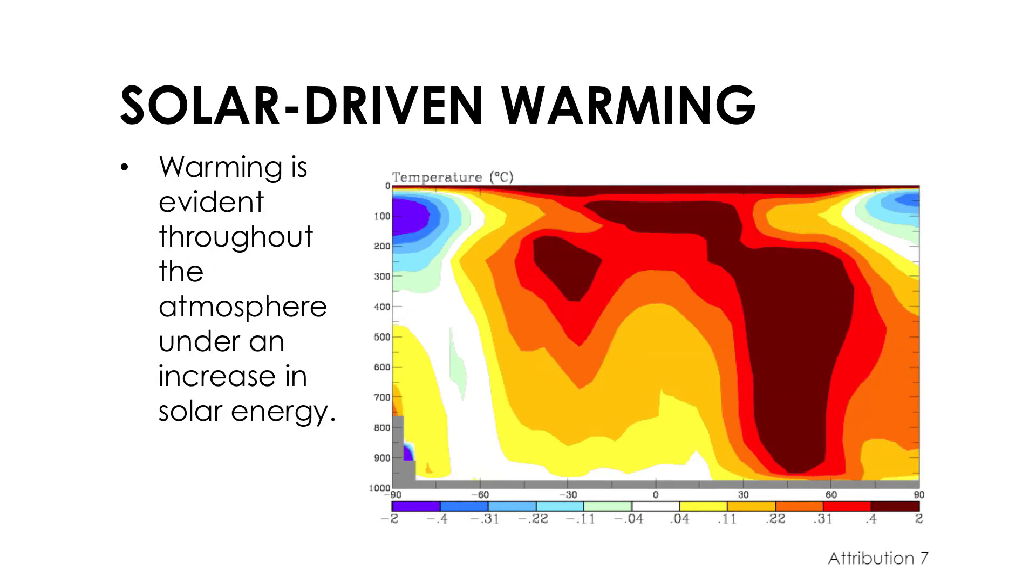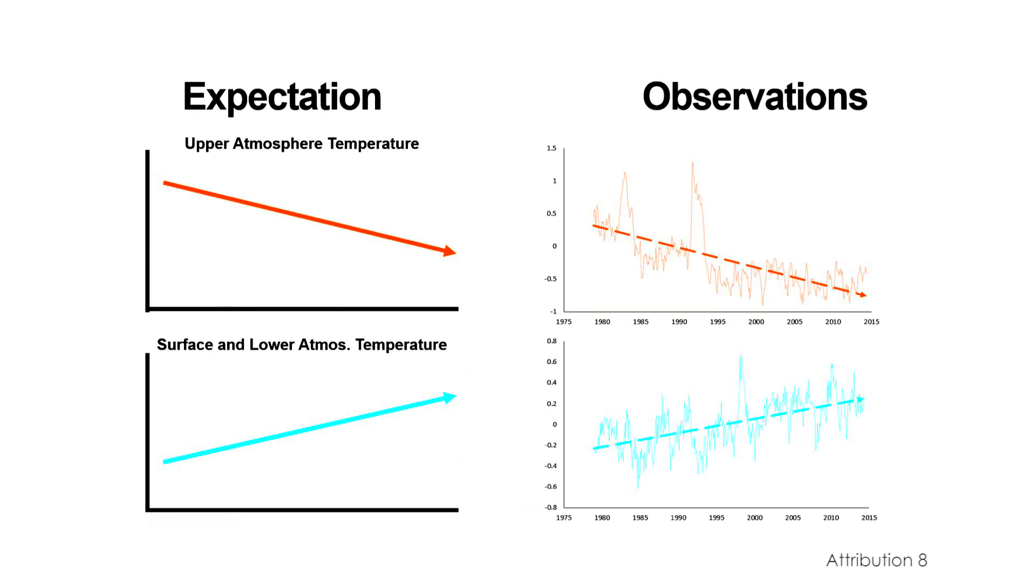By contrast, warming due to some natural factor, like more sunlight reaching the Earth, would warm the surface and the upper atmosphere as well. The cooling of the upper atmosphere while the surface warms is a fingerprint of increased greenhouse warming, and it's exactly what we can see happening now.